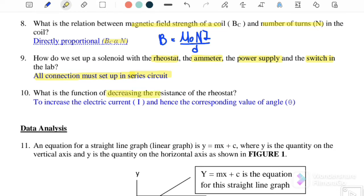What is the function of decreasing the resistance of the rheostat? It helps us to increase the current and the corresponding value of angle. When we adjust the resistance, current will also change. When the current changes, the angle of deflection of the compass will also change. This is how we use the rheostat.